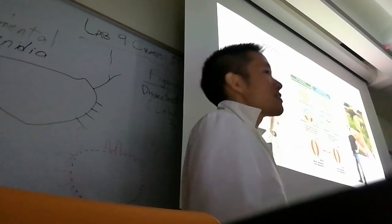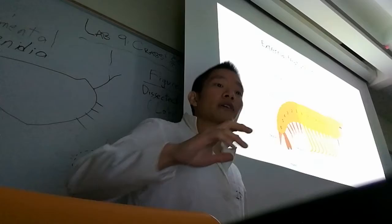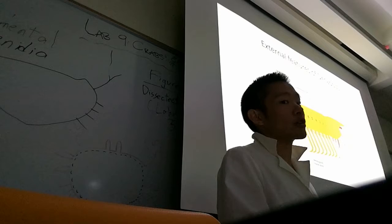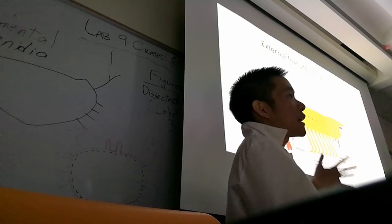Here we have some external features of decapods. Decapods are the order that crabs are in, and they're named that way because they have ten limbs - five pairs of limbs.